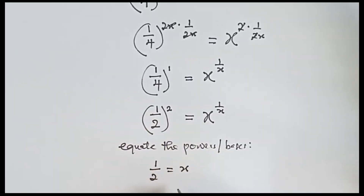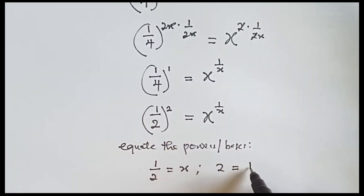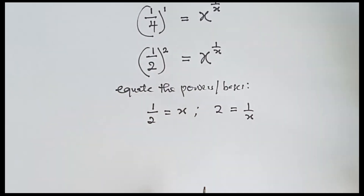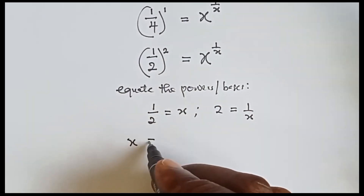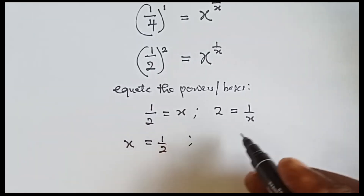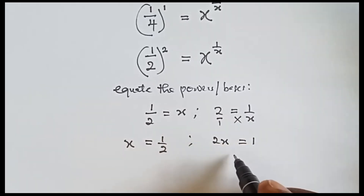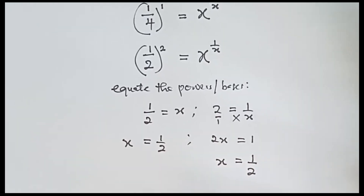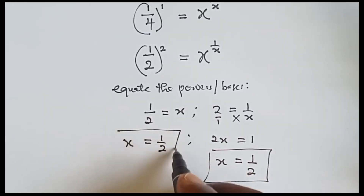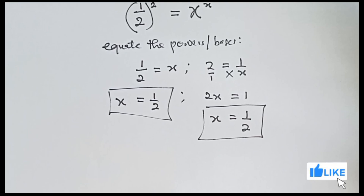So 1 over 2 equals to x. And when we equate the powers we have 2 equals to 1 over x. From the first equation, x equals 1 over 2. From the second, cross-multiplying gives 2x equals 1, so x equals 1 over 2 as well. Both methods confirm that x equals 1 over 2.